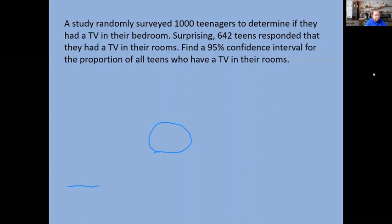Let's try the first example. A study randomly surveyed 1,000 teenagers to determine if they had a TV in their bedroom. Surprisingly, 642 teens responded that they had a TV in their room. Do you guys have a TV in your room? Find a 95% confidence interval for the proportion of all teens who have a TV in their rooms.